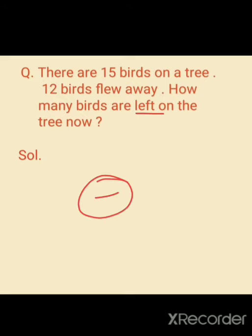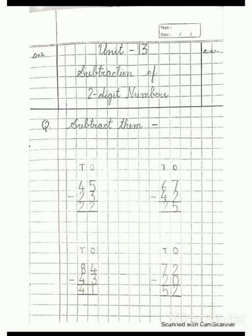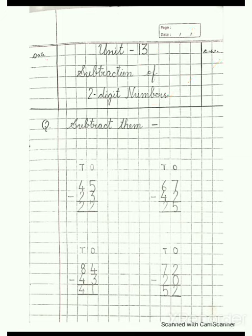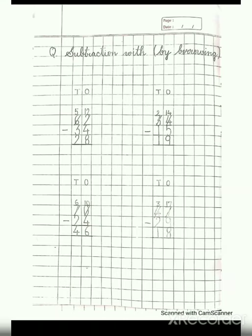Now let's start the copy work. Draw two lines as headlines. Write the date in the left corner and classwork in the right corner. In the first line write Unit Thirteen and in the second line write Subtraction of Two Digit Numbers. After this write the question: subtract them. Leave three lines and write tens and ones. Write the boxes and write forty five minus twenty three. Do all three questions in the same way, including the subtraction by borrowing.